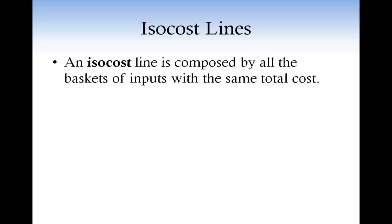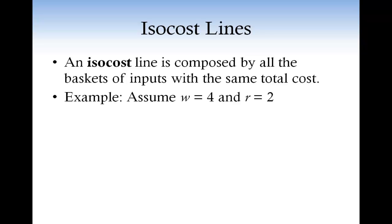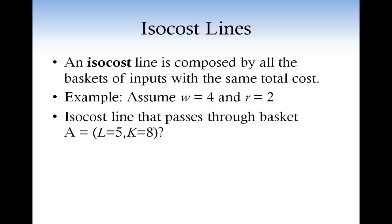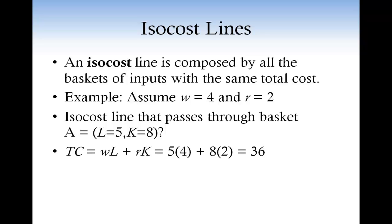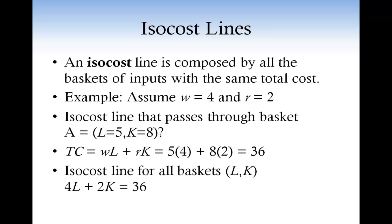Now I want to introduce the concept of isocost line. An isocost line is composed of all the baskets of inputs with the same total cost. For example, assume that the price of one unit of labor W is equal to 4 and the price of one unit of capital R is equal to 2. The basket of inputs A with 5 units of labor and 8 units of capital costs 5 times 4 plus 8 times 2, which is 36. Therefore, the isocost line that passes through A is composed of all the input baskets that cost $36.